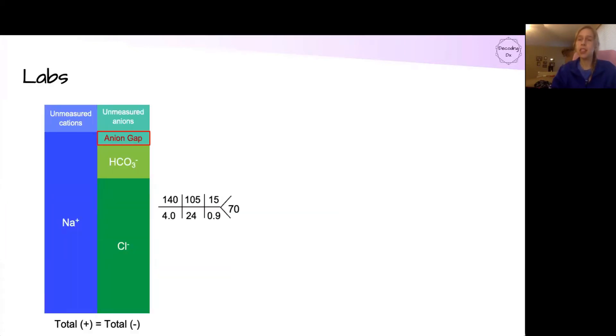To start out, basic labs. These are the main electrolytes that we look at in the basic metabolic panel. We have the sodium, chloride, and bicarbonate, and then unmeasured anions and cations that aren't as big contributors. But it's important to know that the total positive and total negative are equal to each other for electroneutrality.